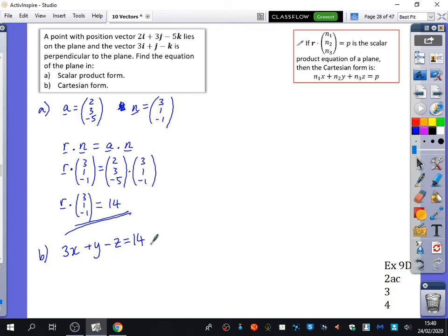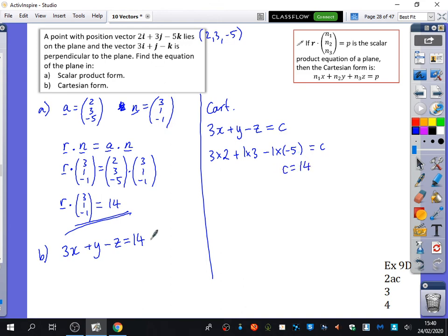Now if you pretended I didn't teach you about the scalar product and we just did the Cartesian form you would have said it's 3X plus Y minus Z equals C. And this coordinate is 2, 3, minus 5 so what you'd have done is 3 times 2 plus 1 times 3 minus 1 times minus 5 equals C. But look at what this is, it's the dot product. So you've been doing the dot product this whole time.